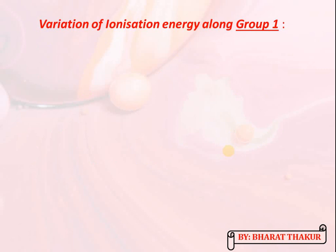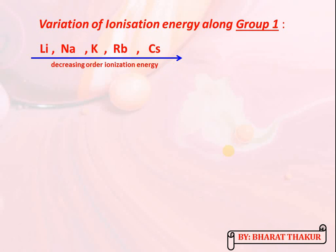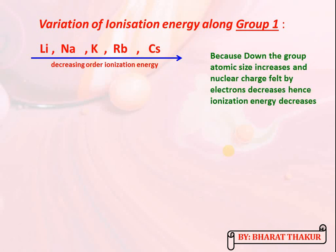Variation of ionization energy along group 1: the elements are lithium, sodium, potassium, rubidium, and caesium. Moving down the group, atomic size increases from lithium to caesium and the nuclear charge felt by the outer electron decreases, so ionization energy decreases. The increasing order of ionization energy is therefore from caesium to lithium, since atomic size decreases and more energy is required.